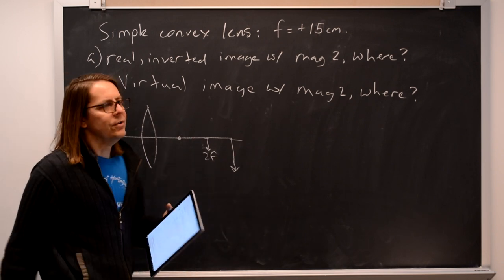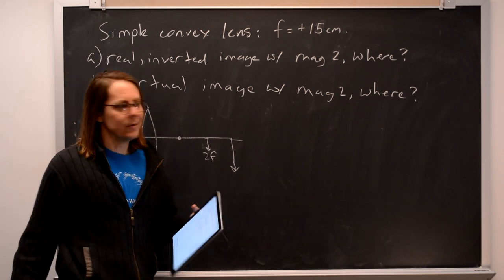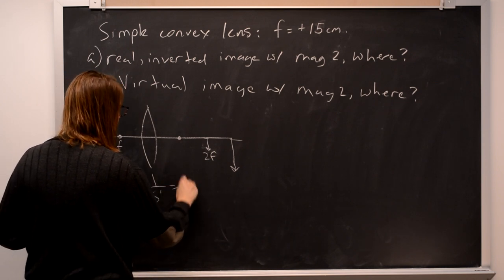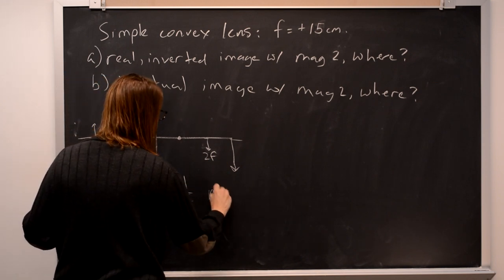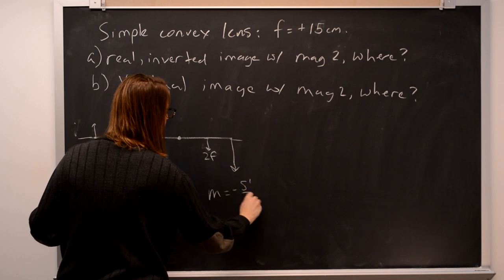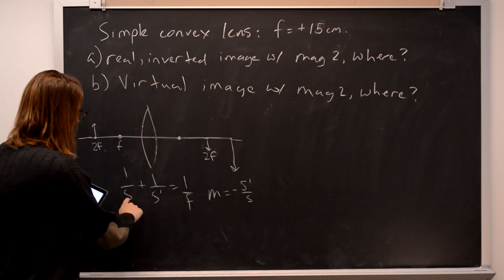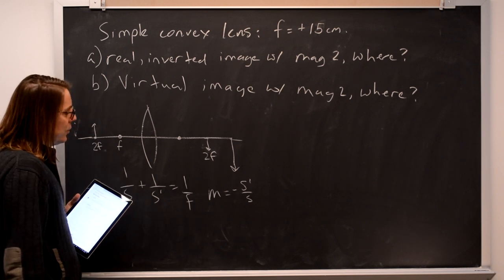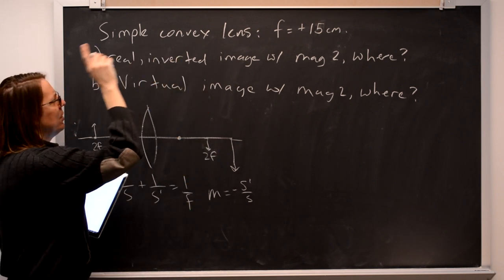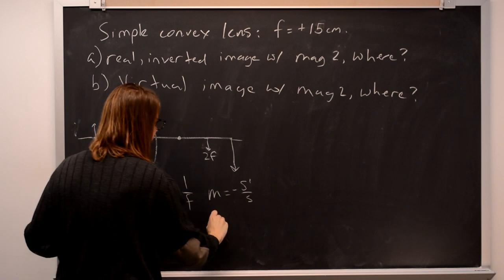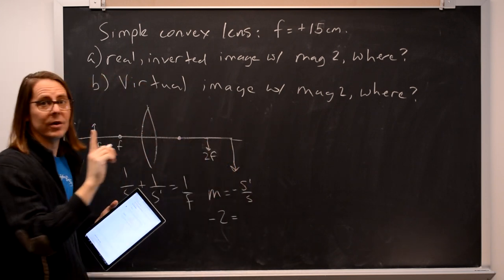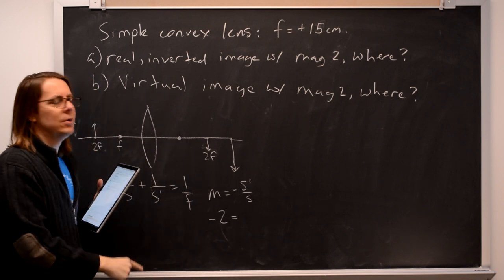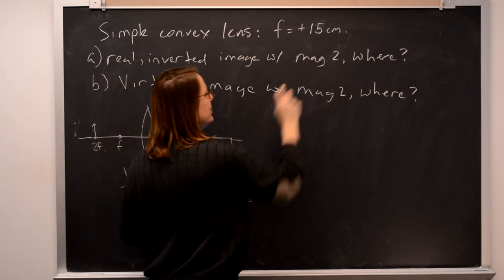Of course you don't have to draw any of this if you just use the thin lens formula. So we can just say 1 over s plus 1 over s prime equals 1 over f, and the magnification formula minus s prime over s. Object distance, image distance, focus. The quick way to use it is to say we want it to be negative 2. I said magnification of 2 but it is inverted, so you put in negative 2. This was the magnitude of the magnification.